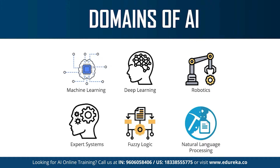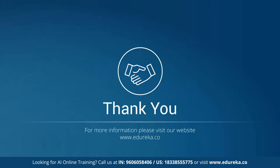An expert system is an AI-based computer system that learns and reciprocates the decision-making ability of a human expert. Expert systems use if-then logic notions to solve complex problems and do not rely on conventional procedural programming. They are mainly used in information management and are seen in fraud detection, virus detection, and managing medical and hospital records. That covers the different branches of artificial intelligence — AI is a vast field. I hope you all enjoyed the session; until next time, happy learning.